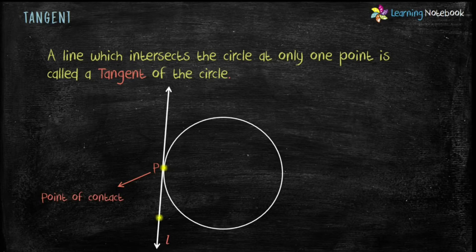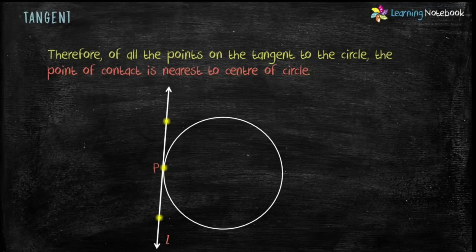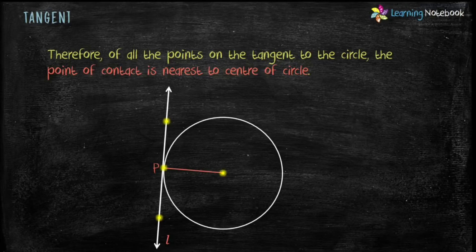Students, every other point on the tangent lie outside the circle. Therefore, of all the points on the tangent to the circle, the point of contact is nearest to the center of the circle.